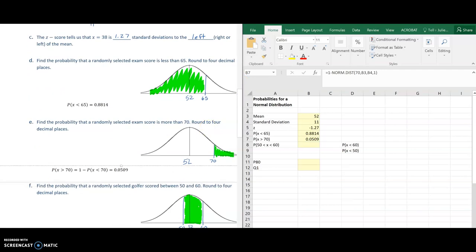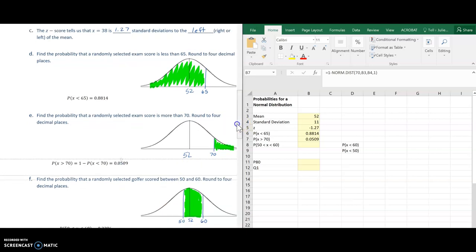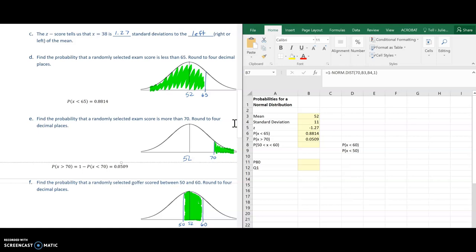Next one, find the probability that the exam scores are between 50 and 60. So if I'm drawing this in the normal curve, it looks like this between 50 and 60, that little area in the middle. So this is a little different from the last ones. I need to find the area in the middle. But again, this normal distribution function only gives me the area to the left.